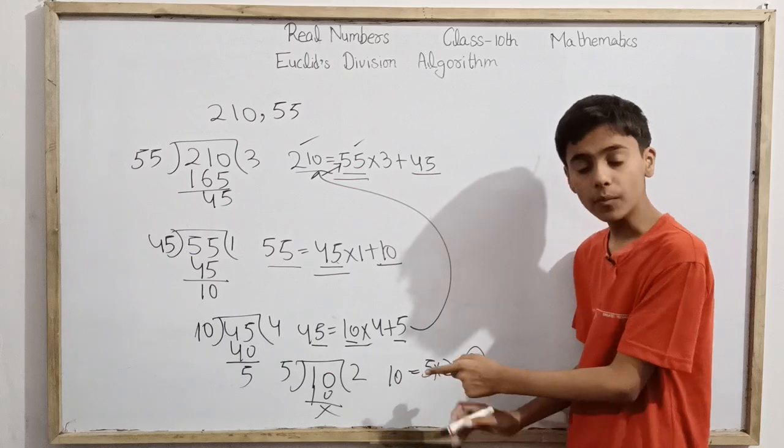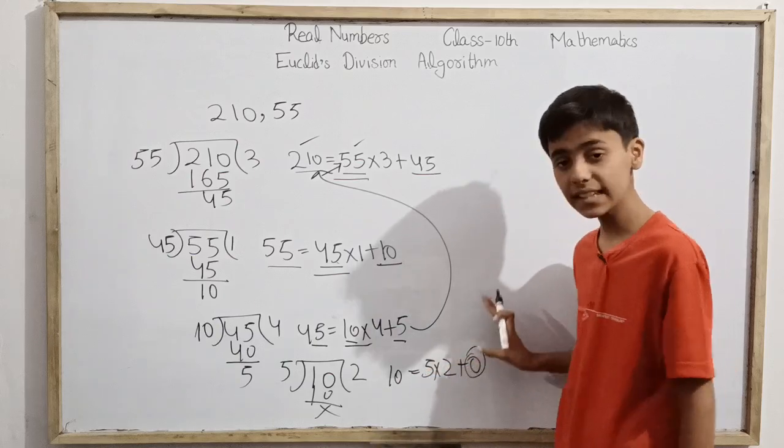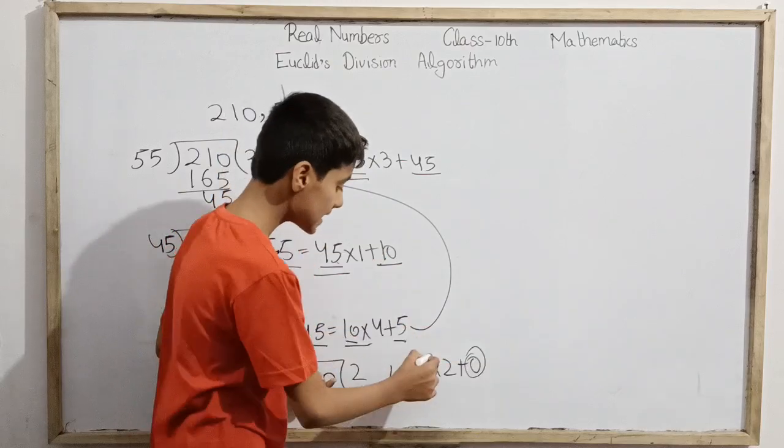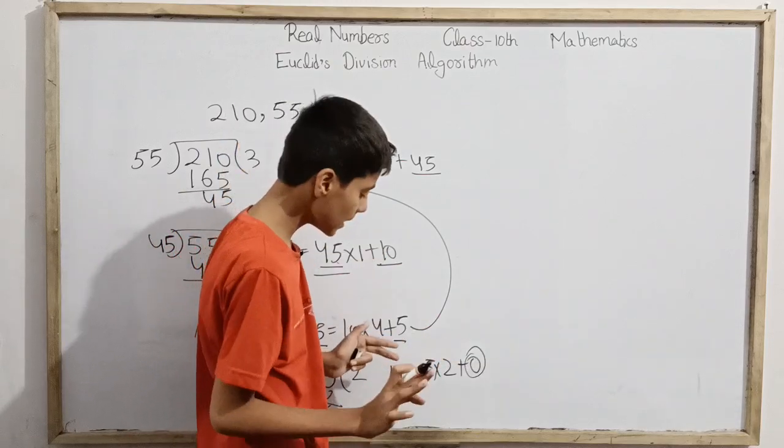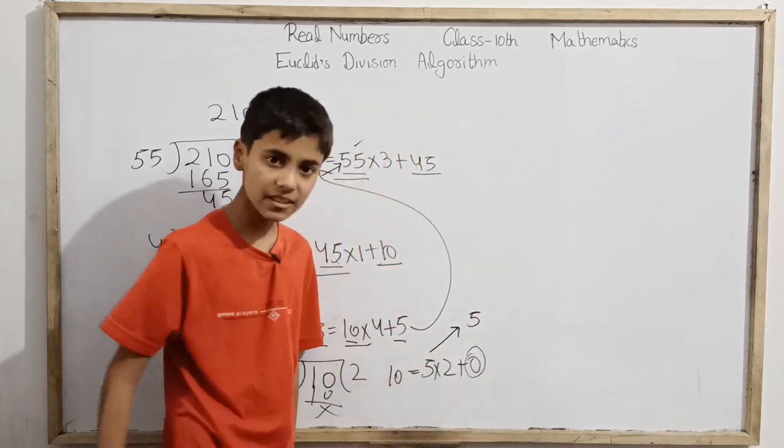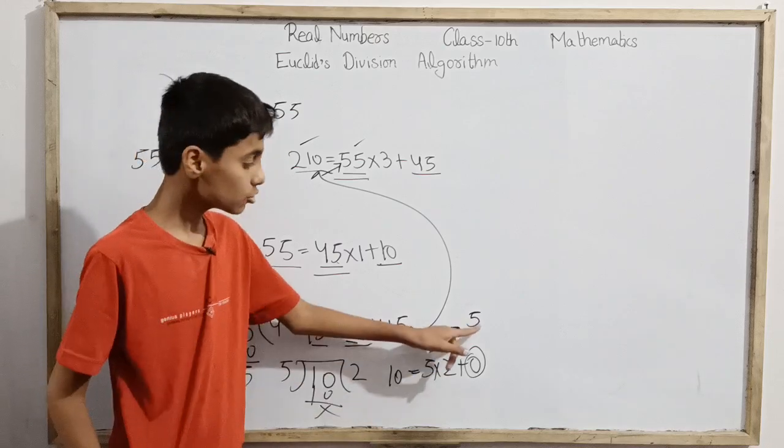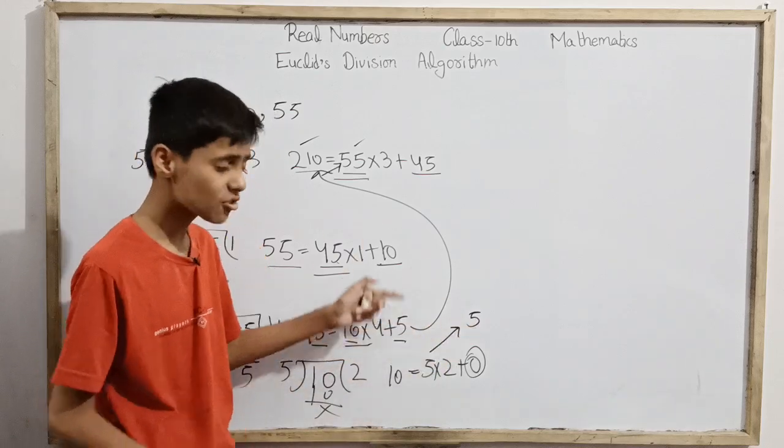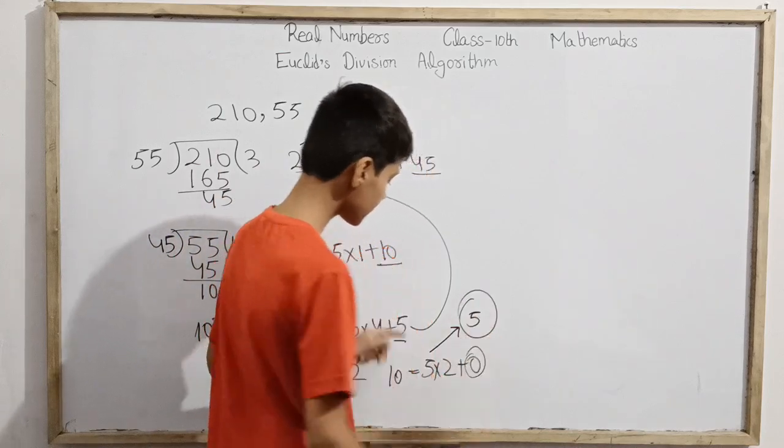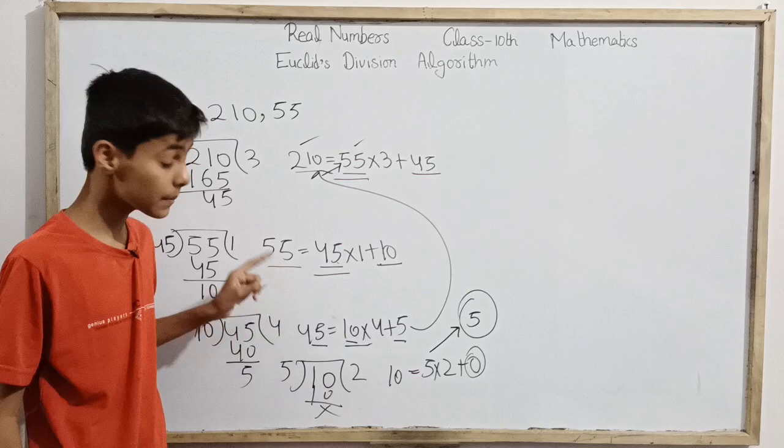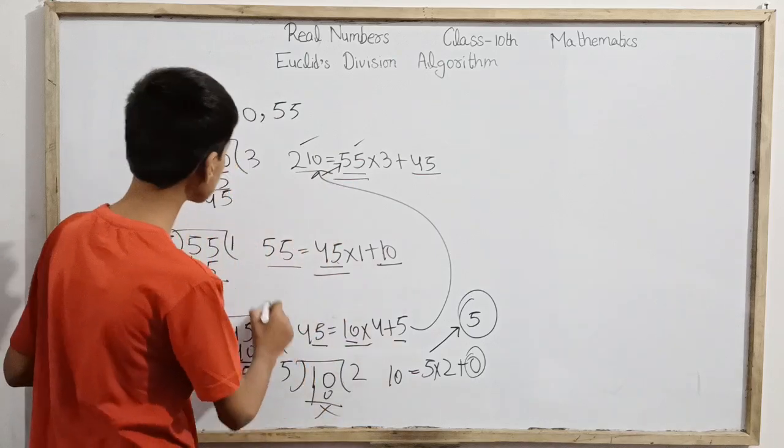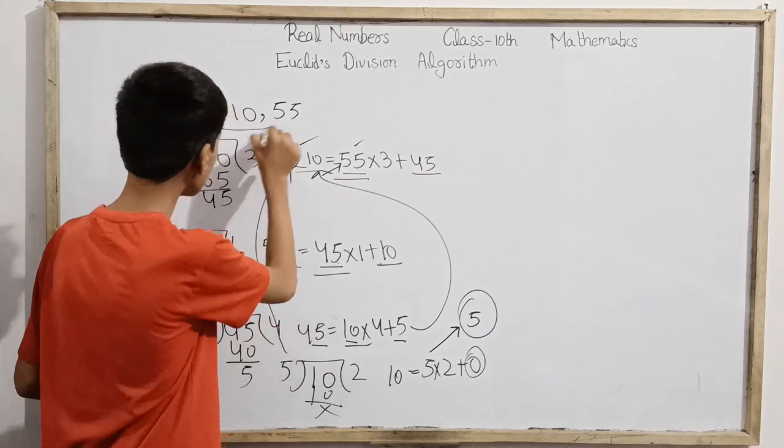There's one last step left. We divide 10 by 5, which goes in 2 times exactly: 10 = 5×2 + 0. Finally we get a remainder of 0. The common divisor of 10 and 5 is the same as the common divisor of 5 and 0.